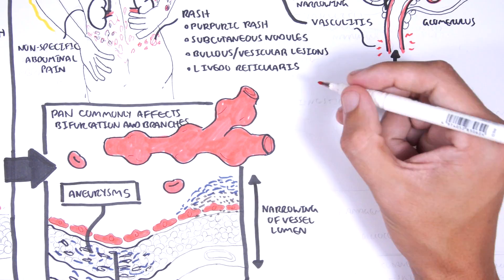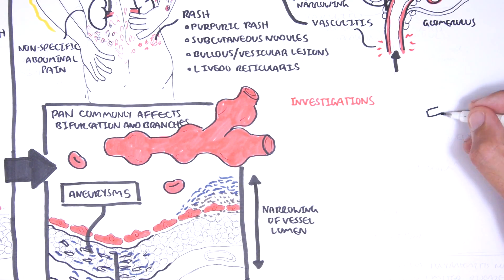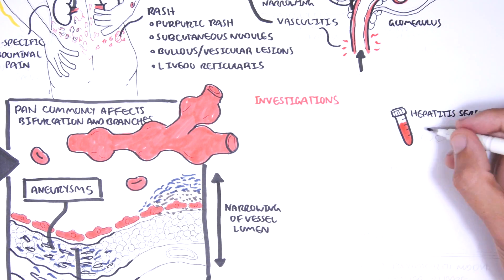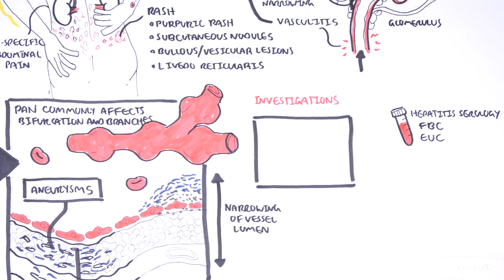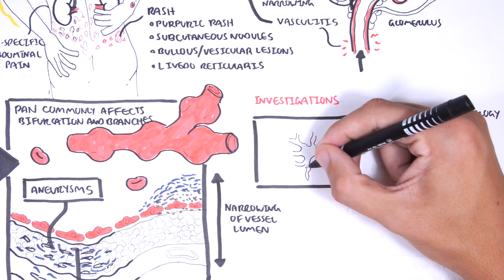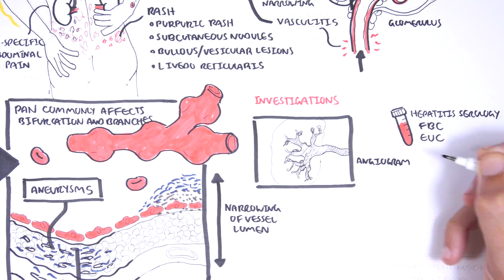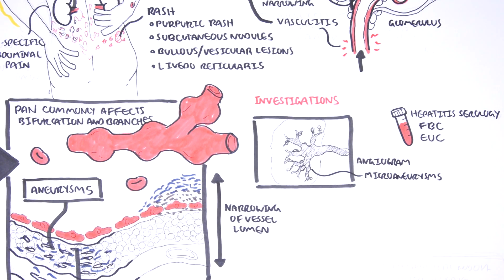Investigations for suspected polyarteritis nodosa include viral hepatitis serology, full blood count, and EUCs (electrolytes, urea, creatinine) to check renal function. Diagnosis is through biopsy, but in the absence of easily accessible tissue, arteriographic demonstration of involved vessels — particularly aneurysms of small and medium-sized arteries in the renal, hepatic, and visceral vasculature — is sufficient to make the diagnosis.